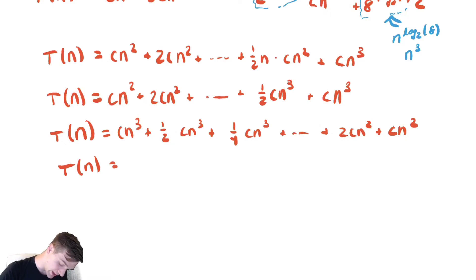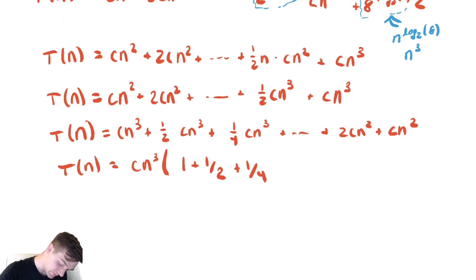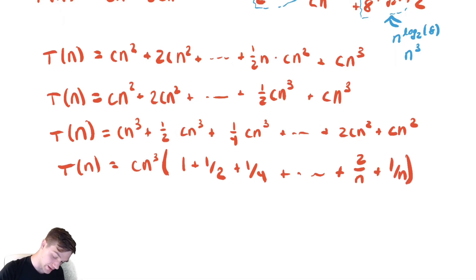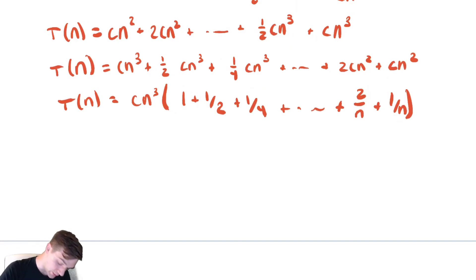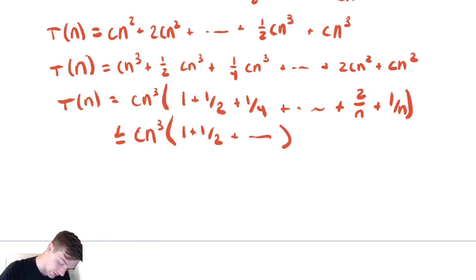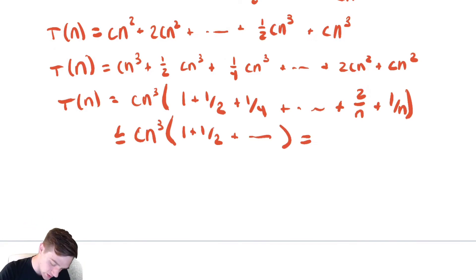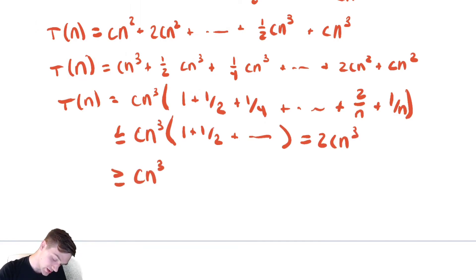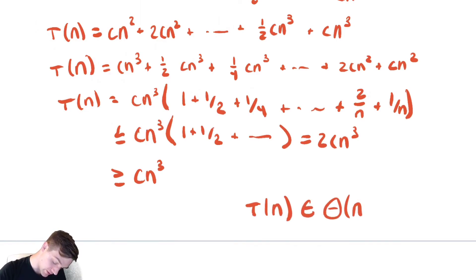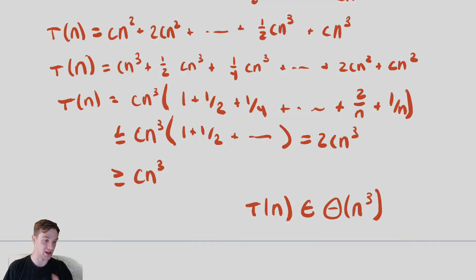Factoring out the dominant power cn cubed, we get 1 plus 1/2 plus 1/4 and so on, all the way down to 2/n and 1/n. This is a geometric summation we can bound above by the infinite geometric series 1 plus 1/2 plus 1/4 plus ... which evaluates to 2. So the upper bound is 2cn cubed. Bounding below by the first term gives cn cubed. Therefore T(n) is in Θ(n³).